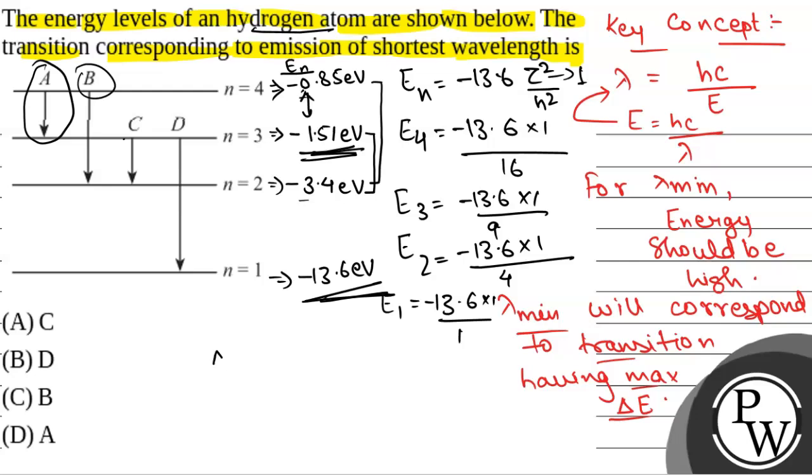The maximum ΔE is for transition D, from -0.85 to -13.6, giving maximum energy change. Therefore, lambda minimum will be for transition D, which is option B. Hope you understood. Best of luck.